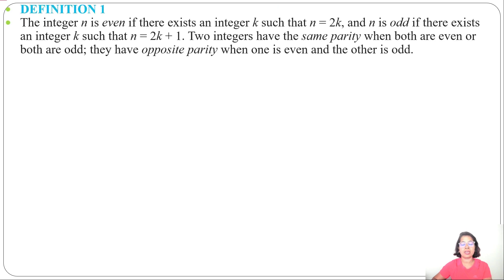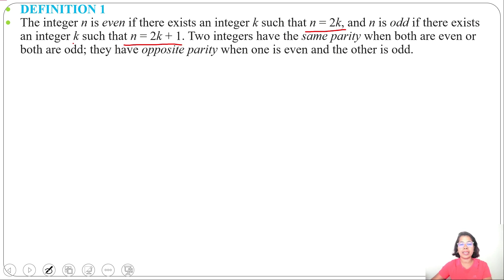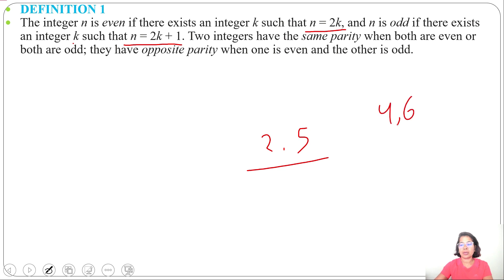Let's see one definition. Definition 1 is about odd and even integers. The integer n is even if there exists an integer k such that n equals 2k, and n is odd if there exists an integer k such that n equals 2k plus 1. Two integers have the same parity if both are even or both are odd, and opposite parity if one is even and the other is odd. For example, 2 and 5 have opposite parity, while 4 and 6 are both even and have the same parity.